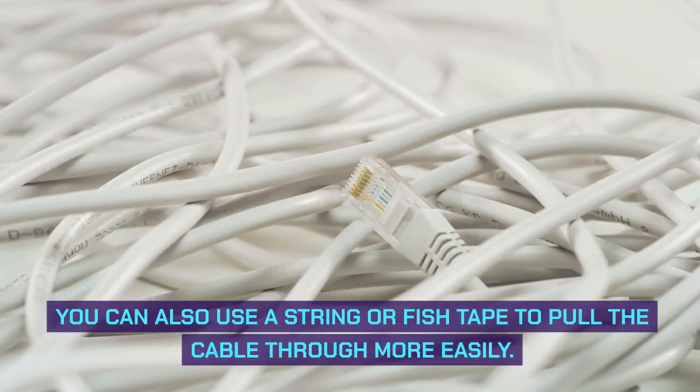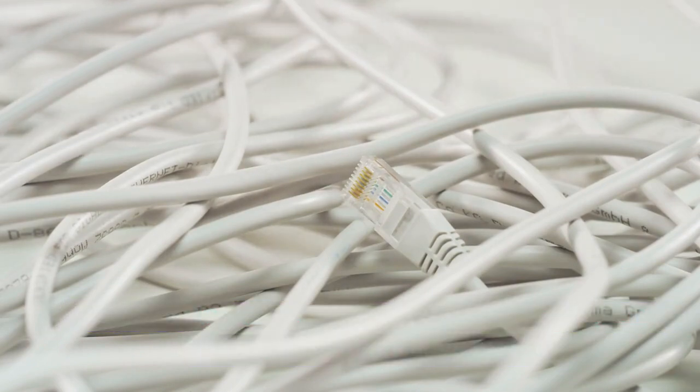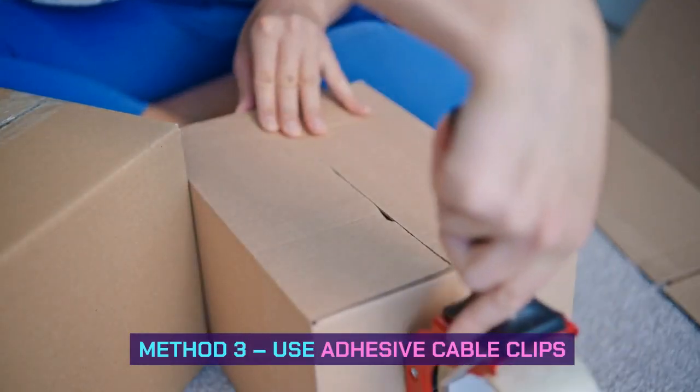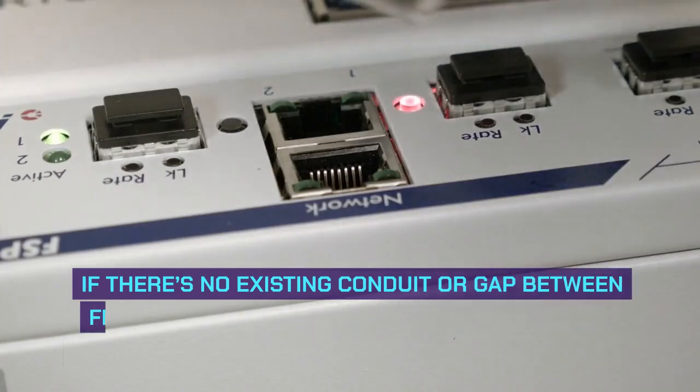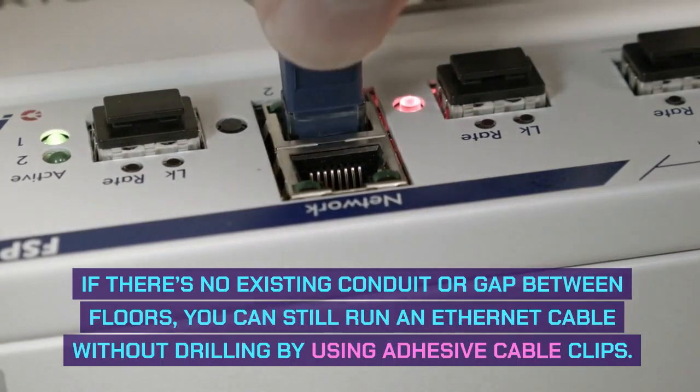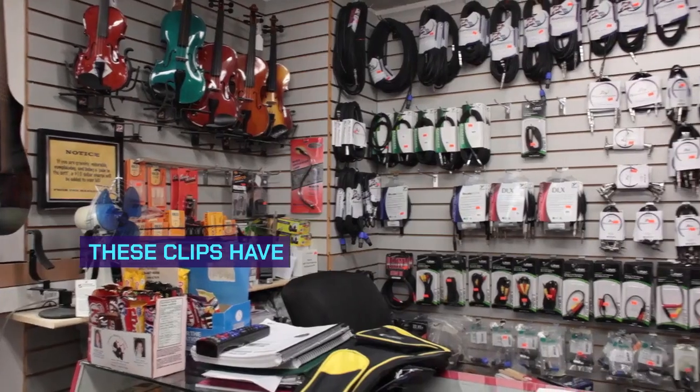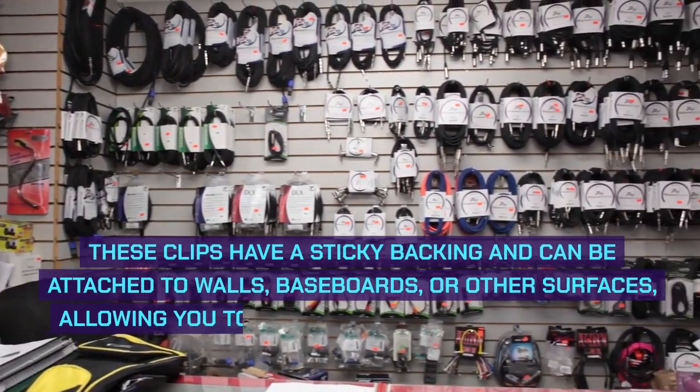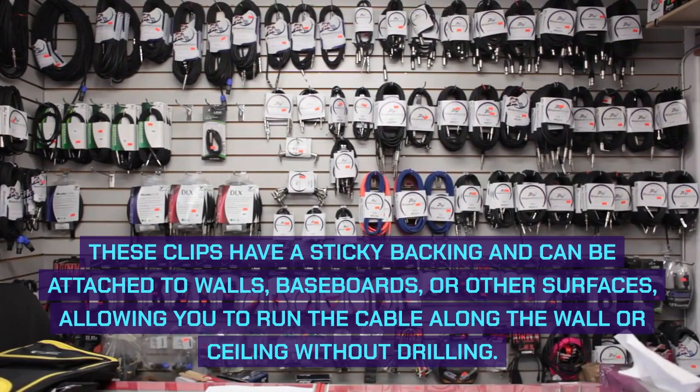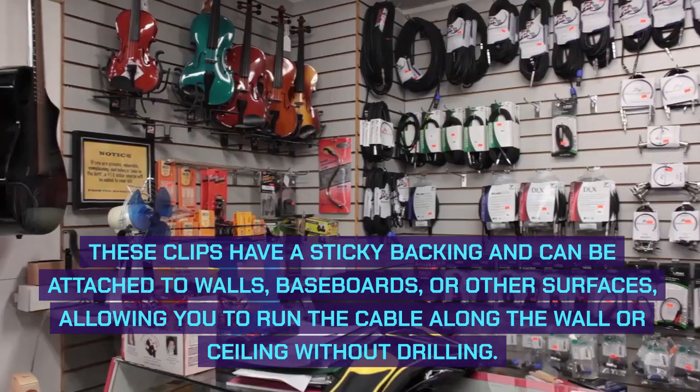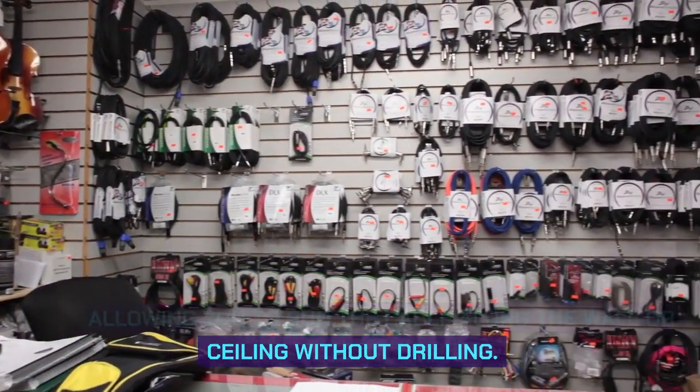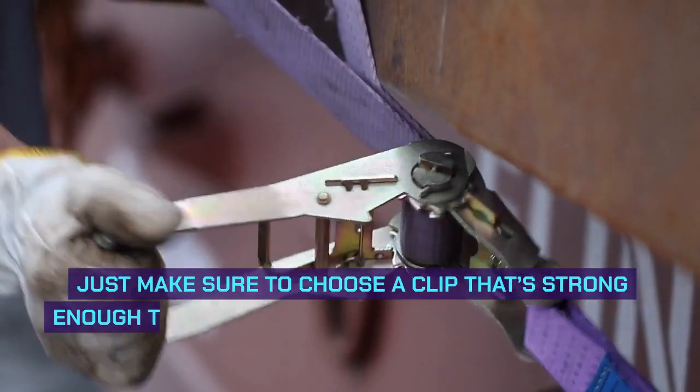You can also use a string or fish tape to pull the cable through more easily. Method three: use adhesive cable clips. If there's no existing conduit or gap between floors, you can still run an ethernet cable without drilling by using adhesive cable clips. These clips have a sticky backing and can be attached to walls, baseboards, or other surfaces, allowing you to run the cable along the wall or ceiling without drilling. Just make sure to choose a clip that's strong enough to hold the weight of the cable and won't damage the surface when removed.